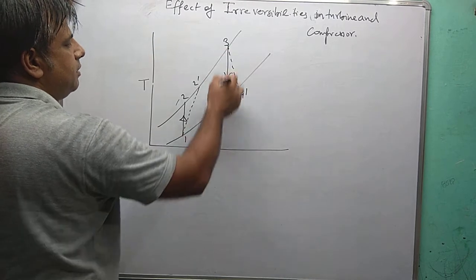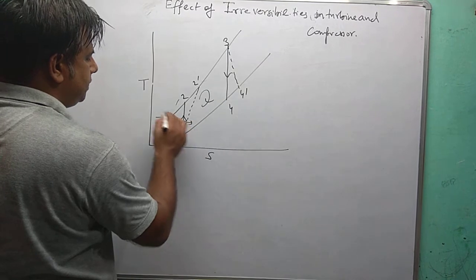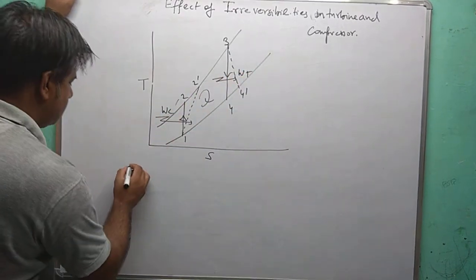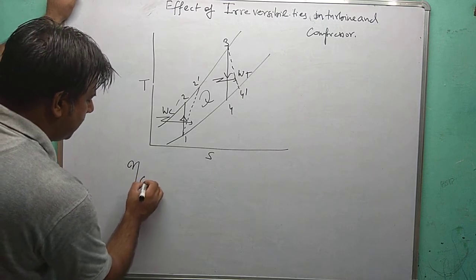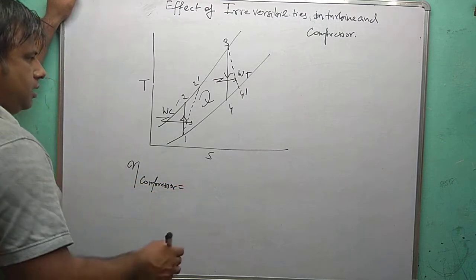Ideal is H3 minus H4, actual is H3 minus H4 dash. So this is for compressor WC and this is for WT turbine work done. So efficiency of compressor is equal to...